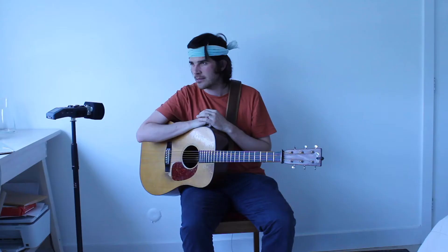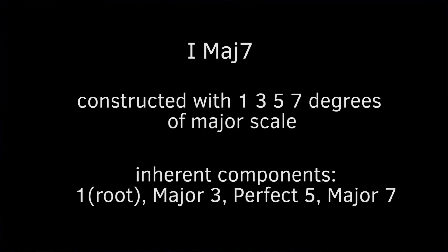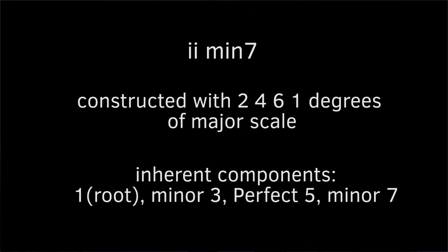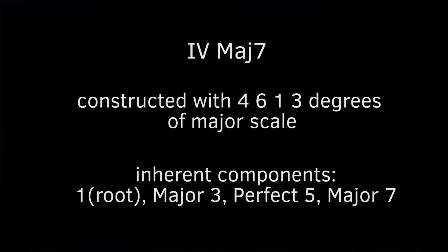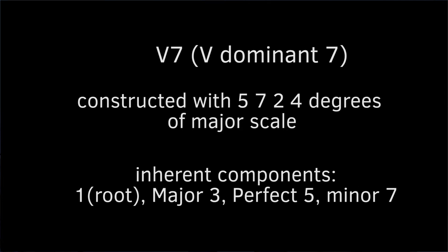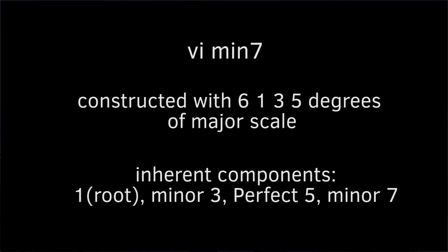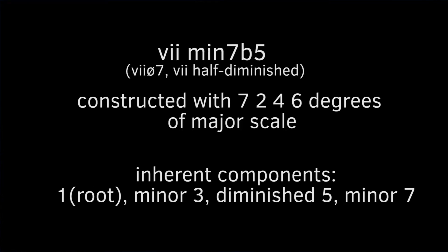Now let's determine the qualities of these 7th chords. The 1 chord is a major 7th chord. The 2 chord is a minor 7th. The 3 chord is a minor 7th. The 4 chord is a major 7th. The 5 chord is a dominant 7th, or just a G7. The 6 chord is a minor 7th. And lastly, the 7 chord is a minor 7th flat 5.